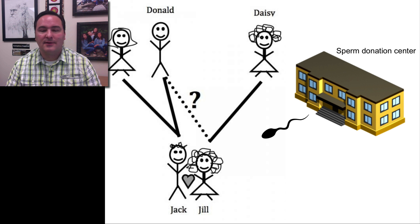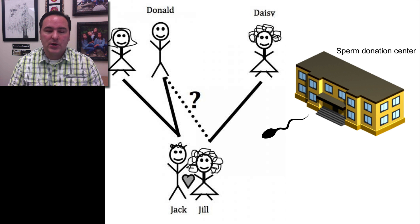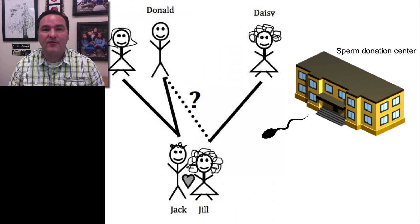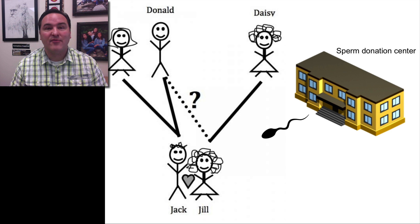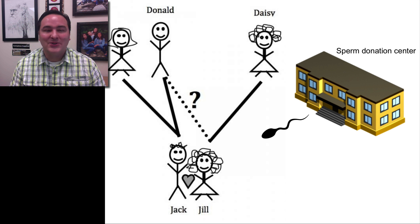The reason the father is unknown is because the sperm came from a donation center. As Jack and Jill are getting to know each other, Donald hears that Jill's father is unknown and came from a donation center. It turns out he found out which donation center the sperm came from, and it was one where Donald had actually contributed sperm earlier on. So Donald is now worried that he might have been the donor for the sperm that created Jill.